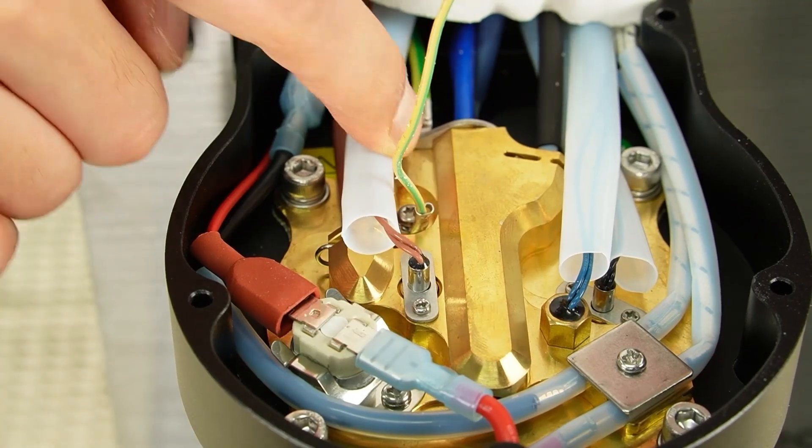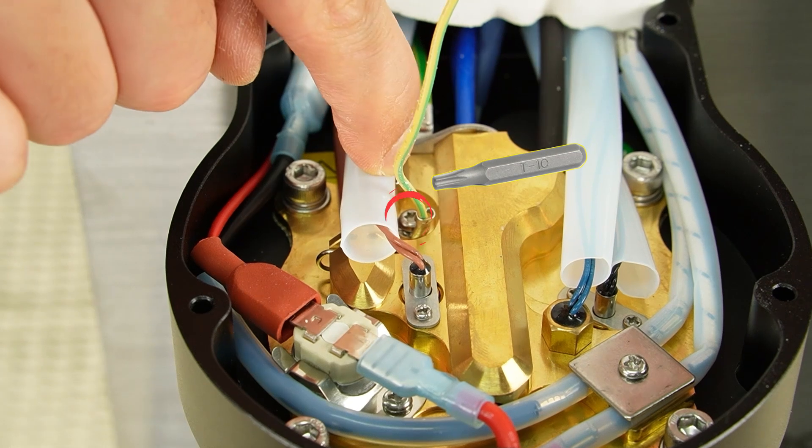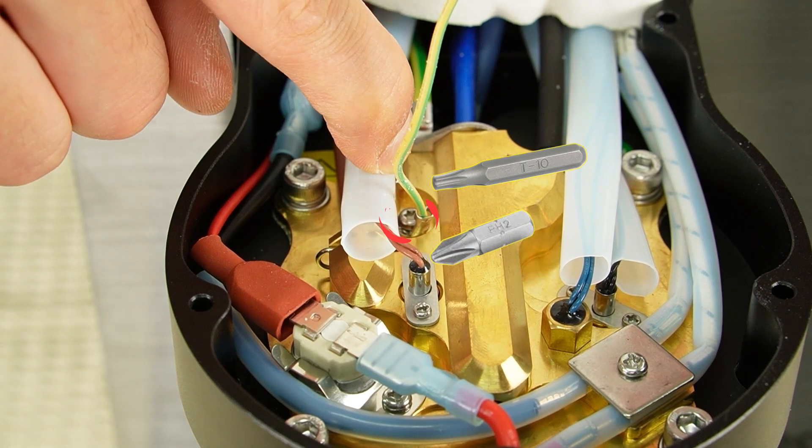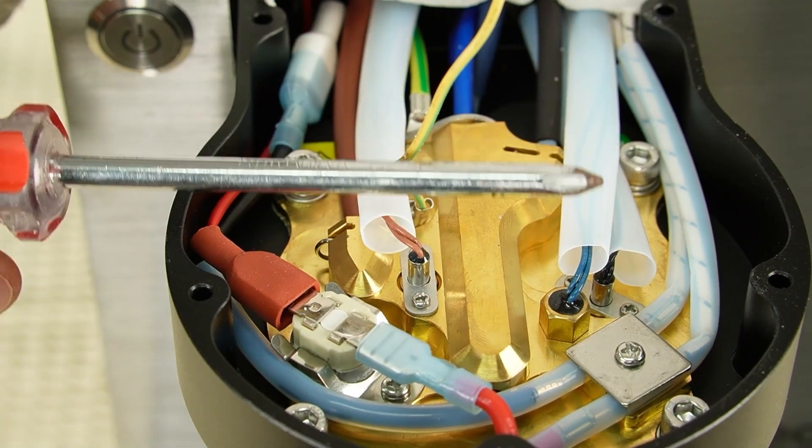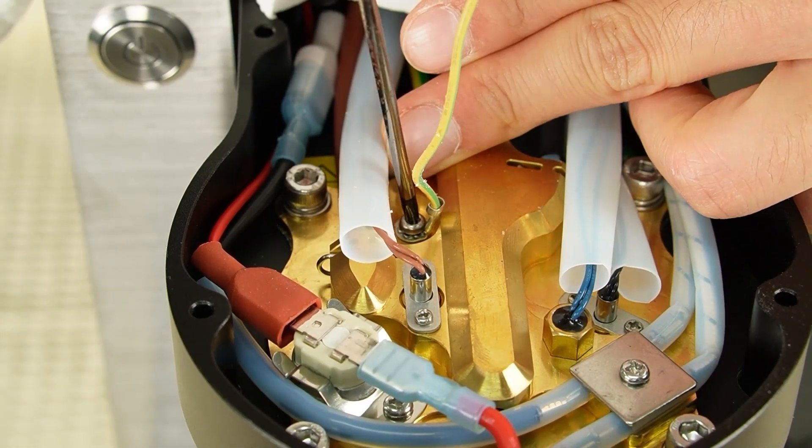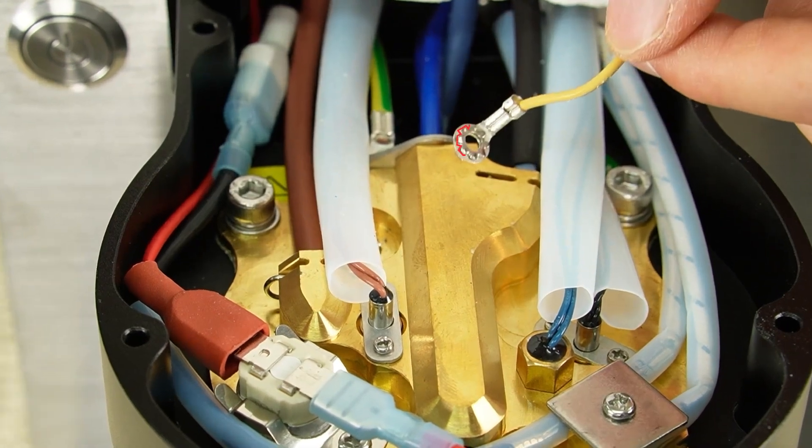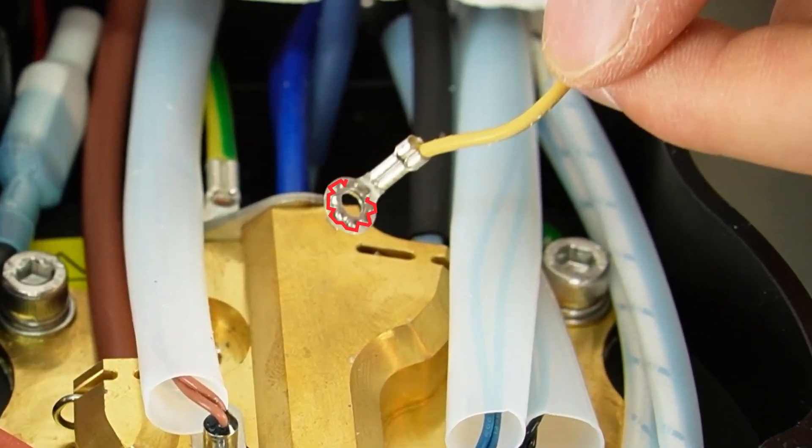There is a ground cable held with a T10 Torx or PH2 Phillips head screw on the brass water path insulator or WPI. Use the appropriate screwdriver to remove it. There is a washer between the screw and the top of the cable end. It may remain on the cable or come out with a screw. Keep it safe.